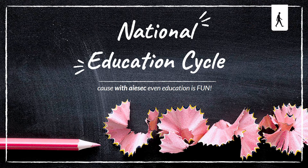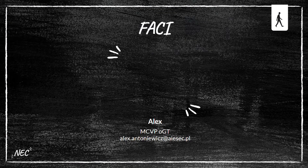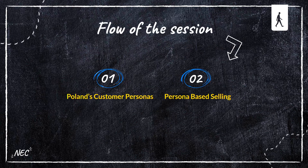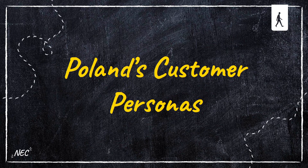Hello everybody, welcome back to OGT's National Education Cycle. I'm going to be your facilitator Alex. For this session we'll be talking about how to sell OGT based on personas — customer personas or buyer personas, however you want to call it. The flow of the session is: we're going to first explain what a buyer persona is and about Poland's customer personas, and then we're going to be doing persona-based selling — how to sell based upon the persona.